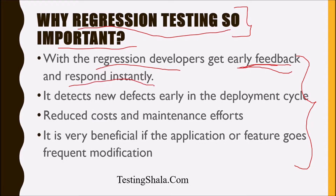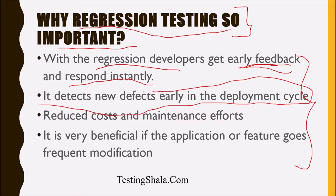Regression testing also detects new defects early in the deployment cycle. As and when we run these regression test cases, it gives early warnings or early signals in terms of defects when we have made any deployment. That is another important reason for regression testing.